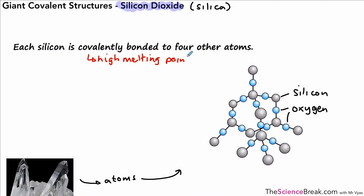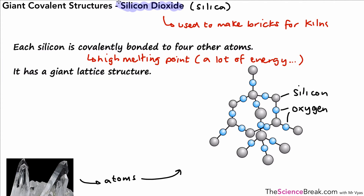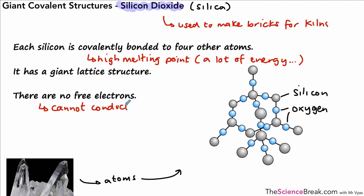Silicon dioxide has a high melting point because a lot of energy is required to break apart those covalent bonds. Because of this high melting point, one of its uses is to make bricks for kilns or furnaces — a kiln being a type of furnace used to heat clay or other substances. Like diamond, silicon dioxide has a giant lattice structure and no free electrons, so it cannot conduct electricity.